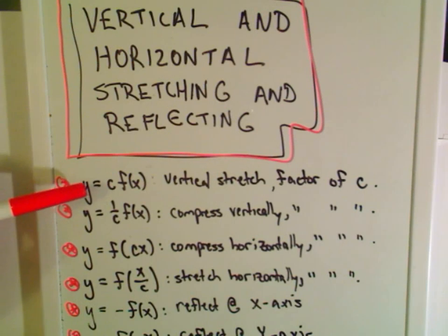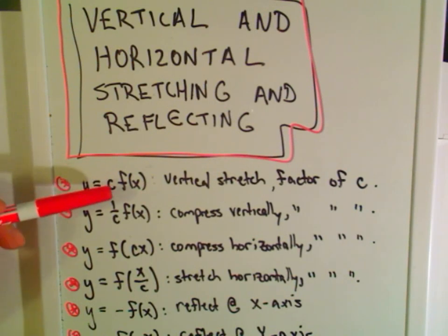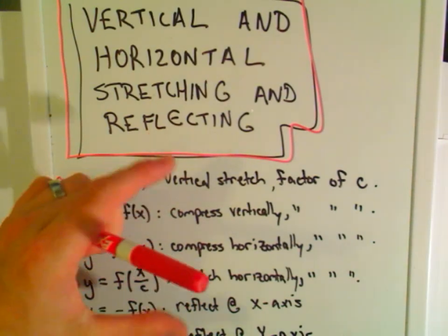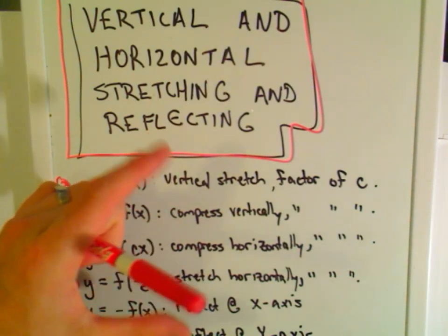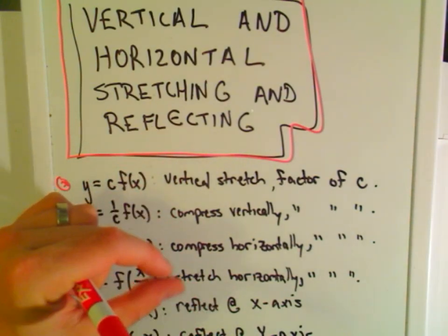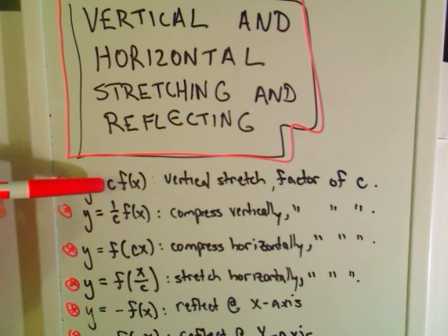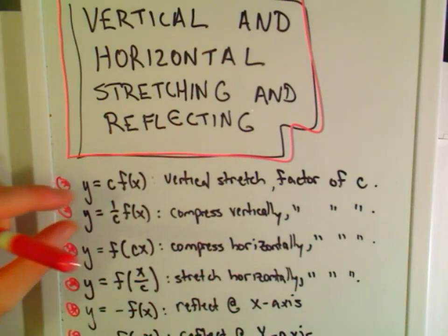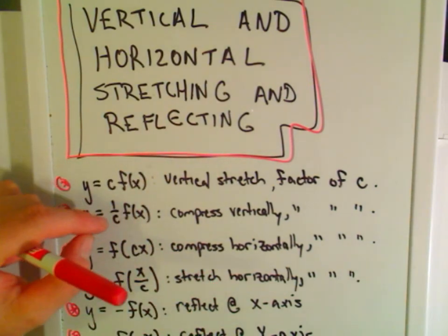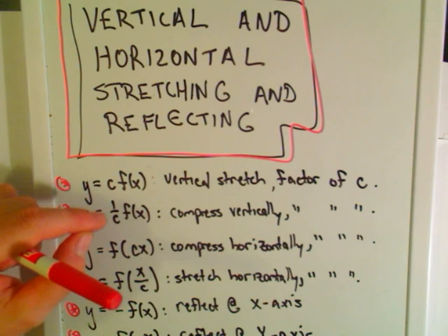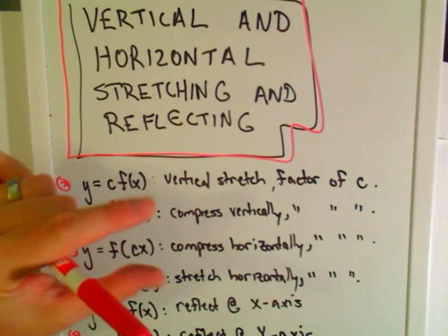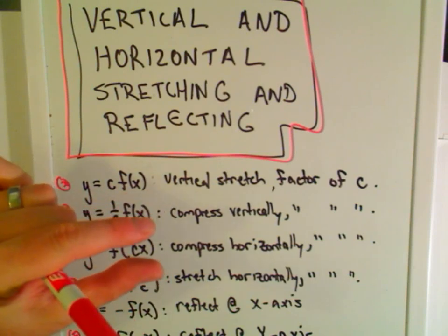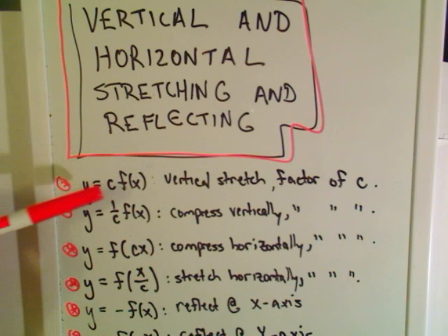The first condition: if you multiply the function by a number out front, it has the effect of stretching it vertically, up and down. If the number is bigger than one, it's going to stretch it. If the number you're multiplying by is a fraction between zero and one, it's going to squish it together. Those are the first two conditions.